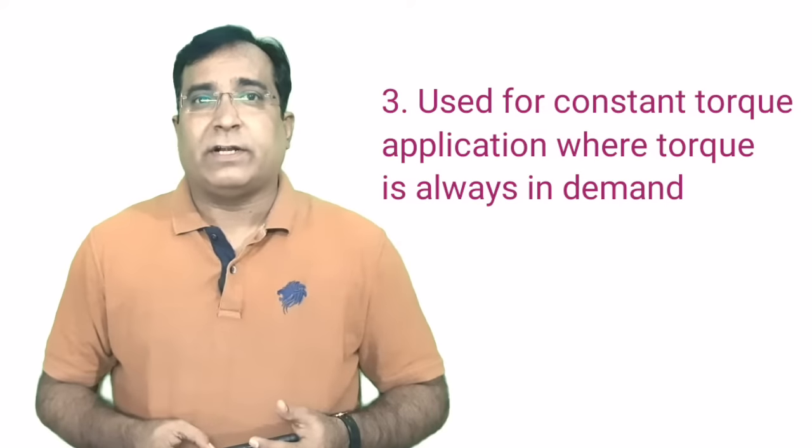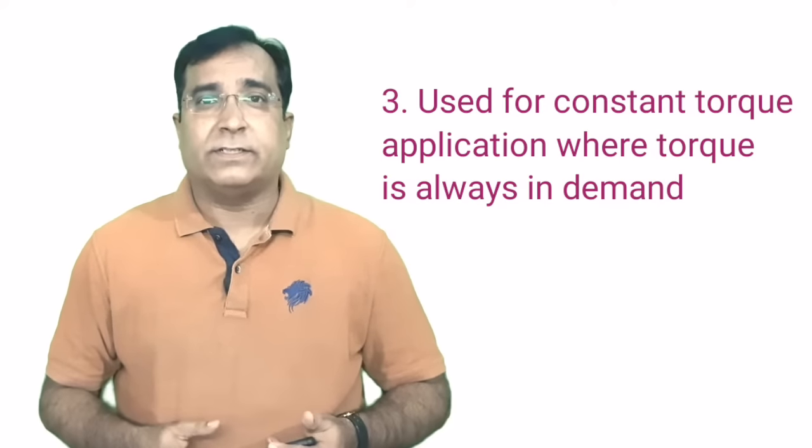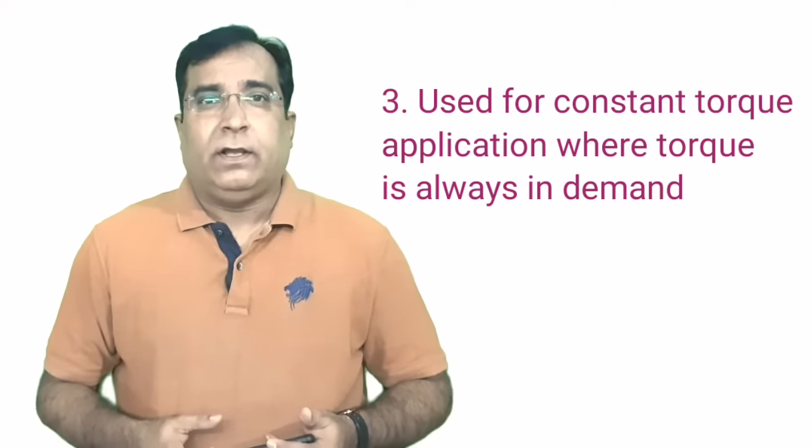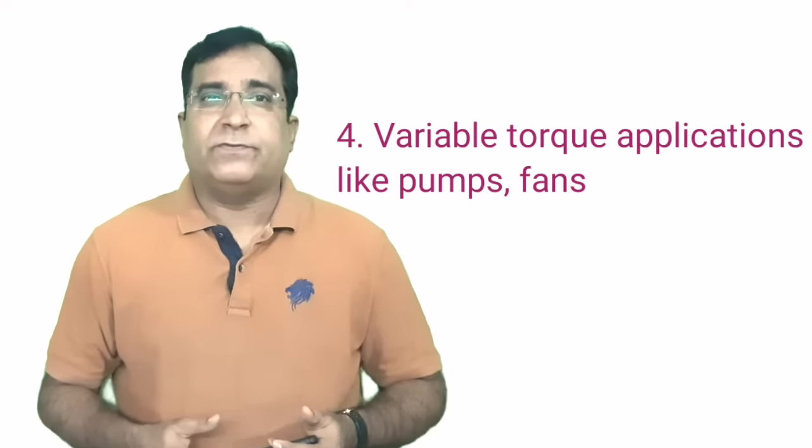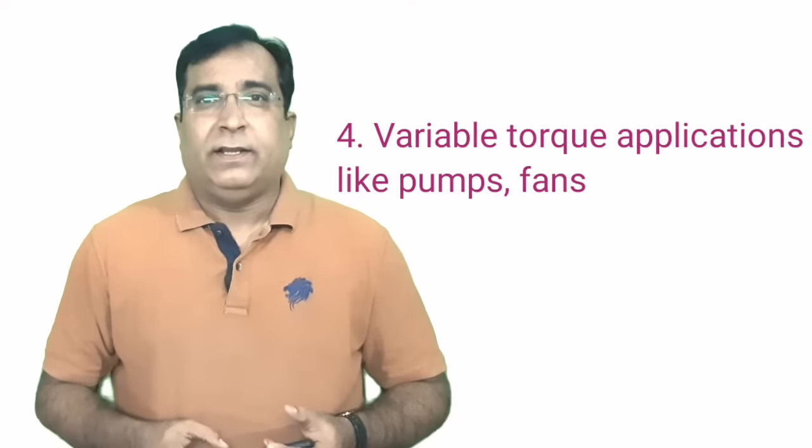Third one: This V/F mode is typically used in constant torque required applications such as conveyor belts, feeders, extruders, basically where the load is always present. Here torque is always in demand during normal operation. For applications such as pumps and fans, variable torque is required - less torque in the starting condition and more torque once full speed is achieved.